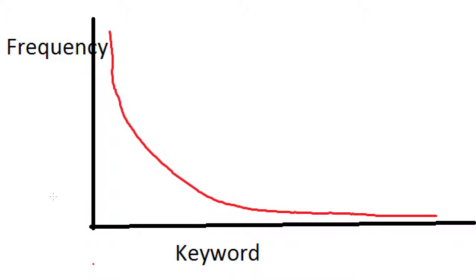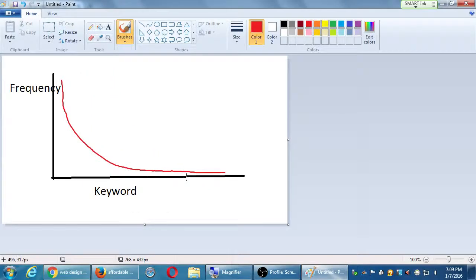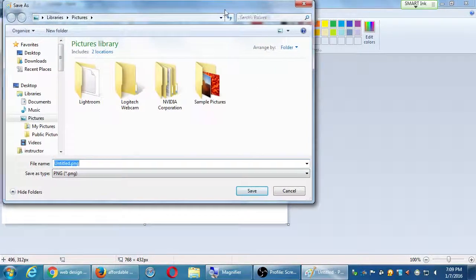There are keywords that everyone is using where you won't get found, and keywords that fewer people are using where you have a better chance. That's what we'll talk about a lot in this class - the long tail keyword. The long tail concept also applies to the explosion of e-books and self-publishing, where you can make a good living reaching that smaller, specific audience rather than trying to reach everyone. In SEO, we get better results by finding our long tail keyword, and we'll have activities and handouts on this.